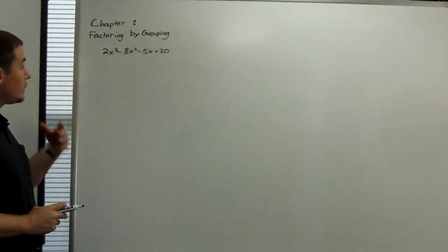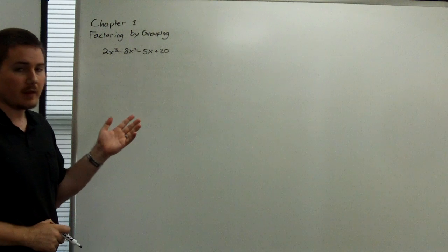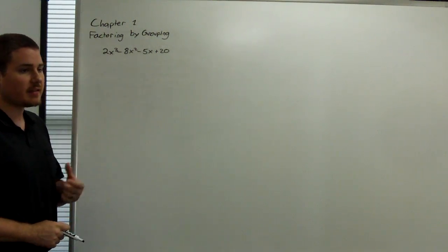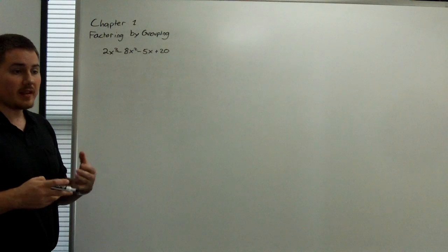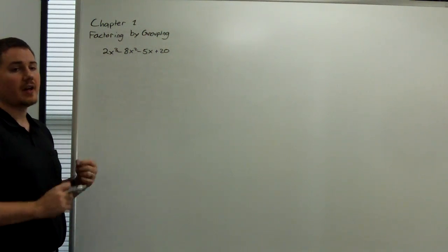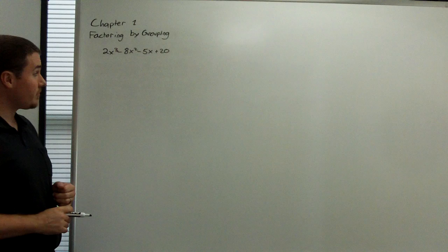All right. For the next problem in our factoring series, we're going to do a problem of factoring by grouping. Now, this works on a very select set of x to the thirds. And as we'll see with the AC method, it works when you decompose an x squared term just right.